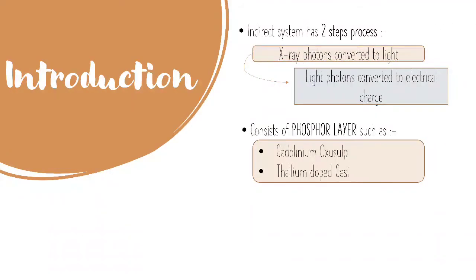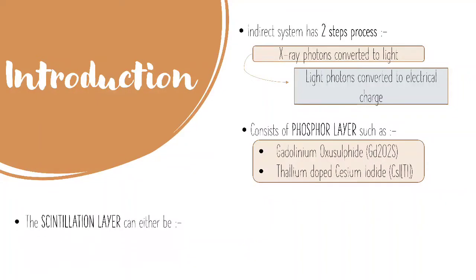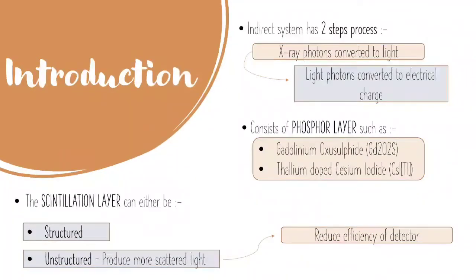Just like I mentioned earlier, the indirect system has a two-step process. The first one is that the x-ray photons will be converted into light, and the light photons will then later be converted into electrical charge.